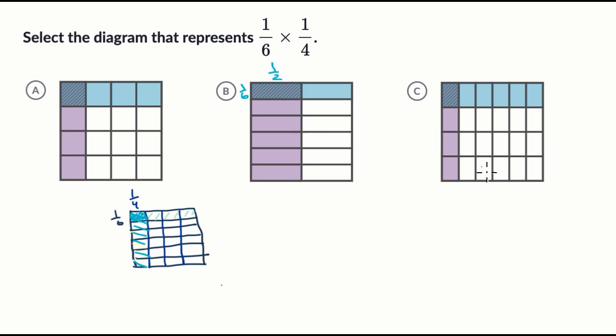This one over here doesn't look like what we did, but if we turn it around and if we do it the other way, where if we divide it into fourths horizontally, and then into sixths vertically, it looks a lot like choice C.